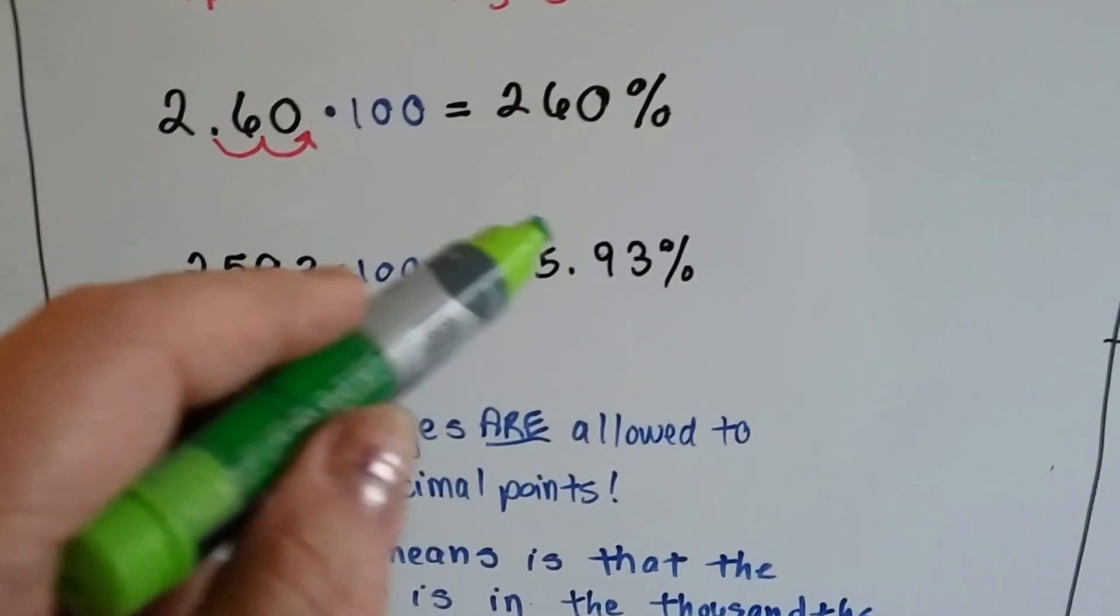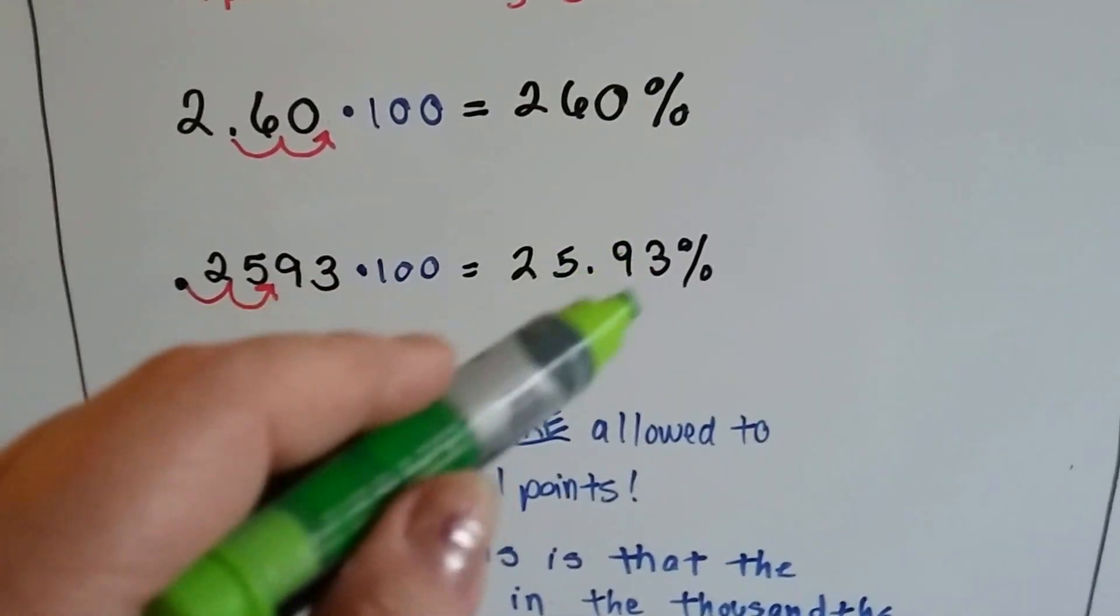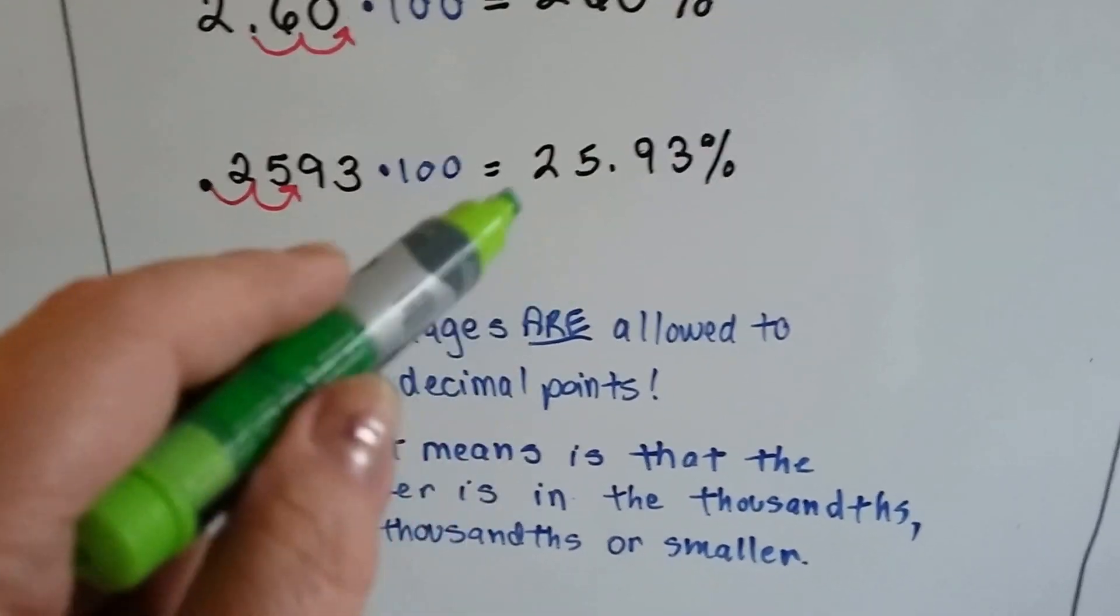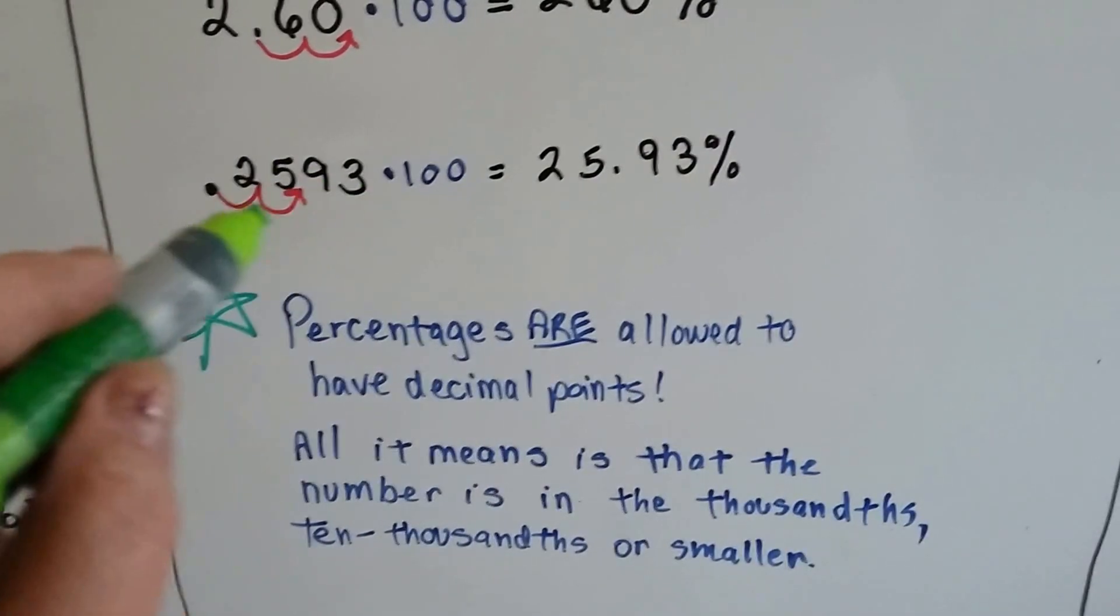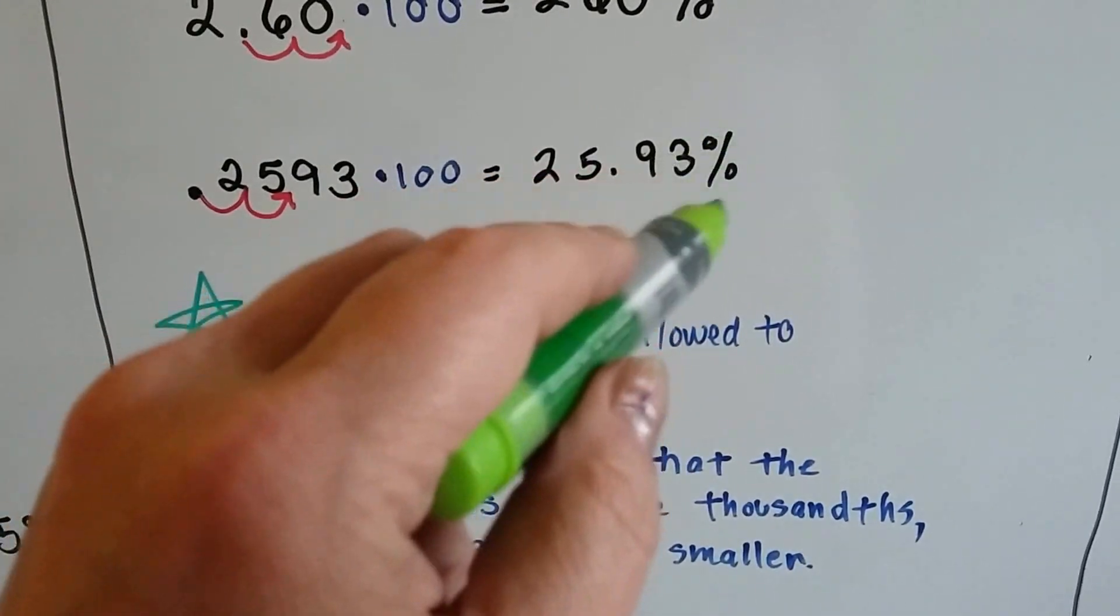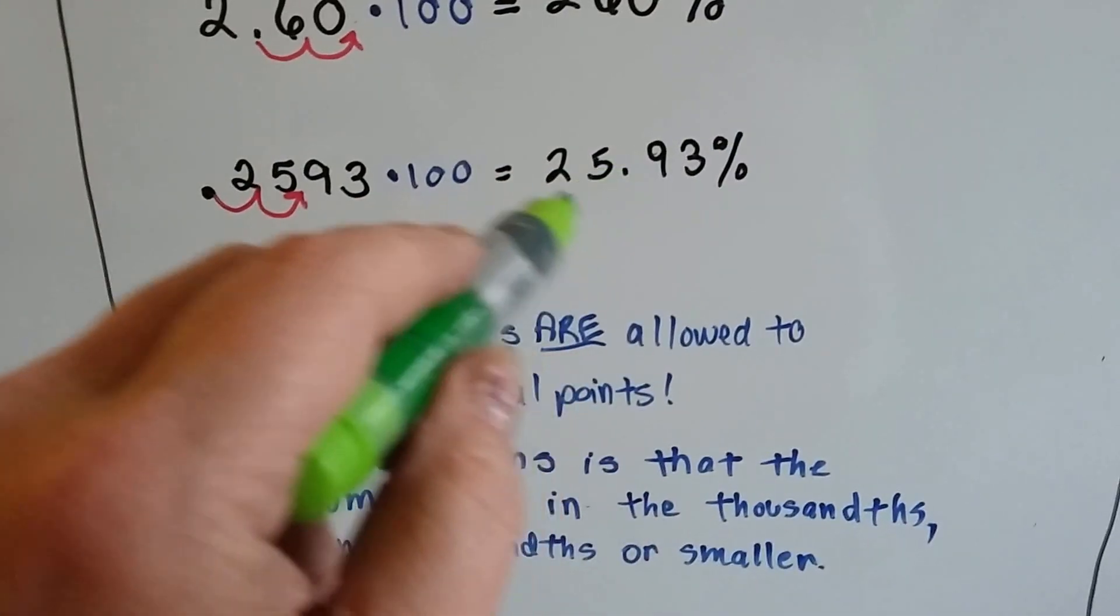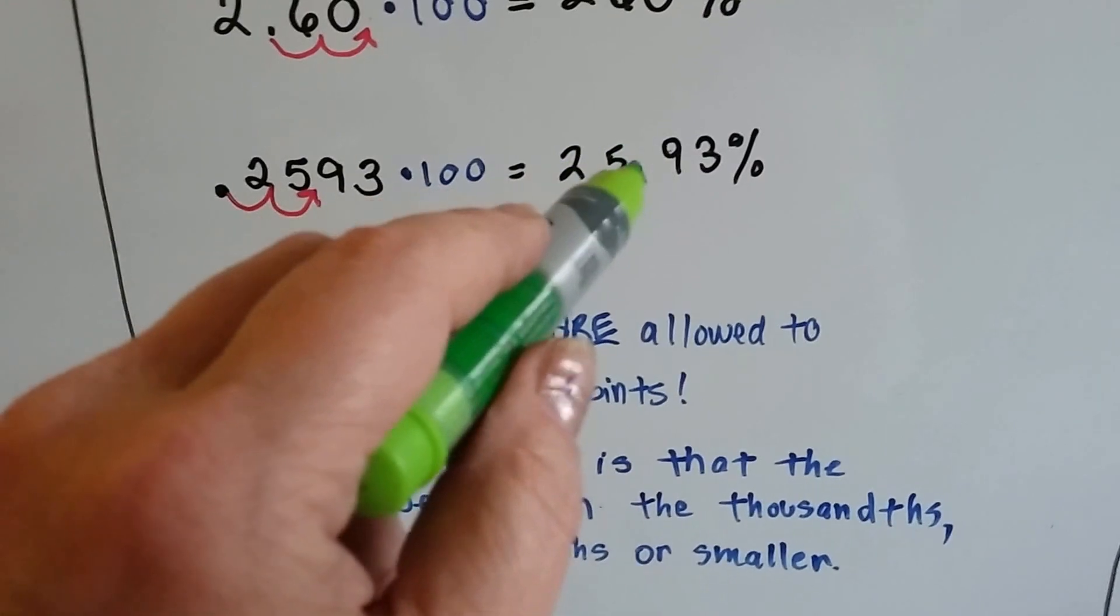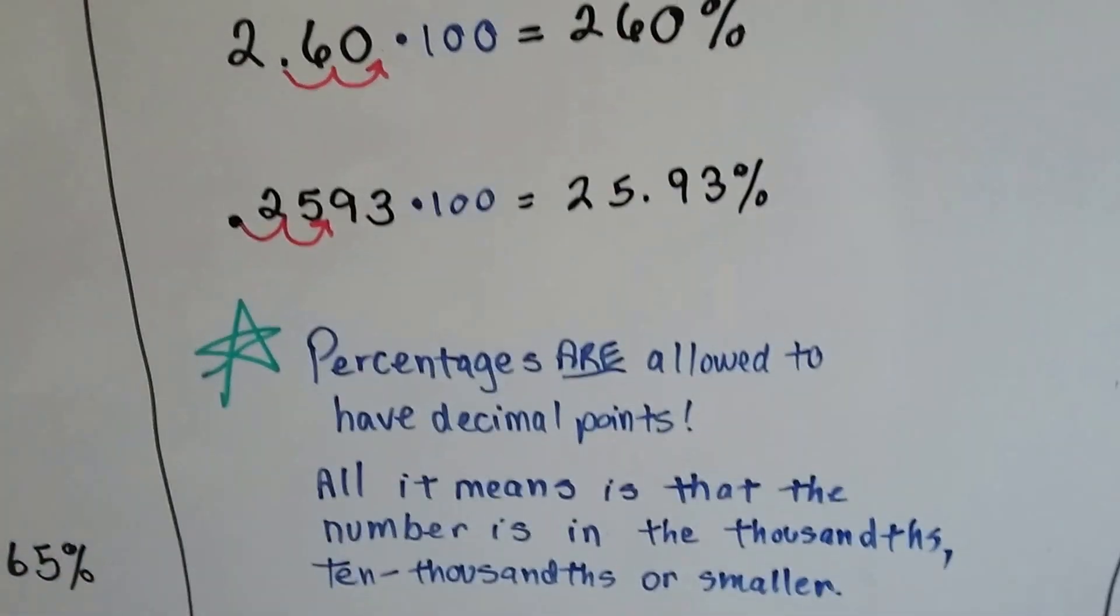This means that it's 25.93 of a hundred. So if we were to remove the decimal point, we'd be into the ten-thousandths. So because the percentage sign means of hundreds, we had to add a 25 point here to make it work.